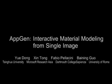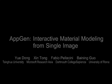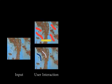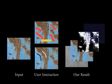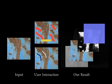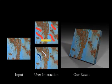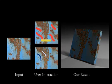This paper presents AppGen, an interactive system for modeling material from a single image input. Given an input image, the user can interact with our system using a stroke-based interface to specify global shading and reflectance, while our algorithm infers the reflectance and normals for each pixel, and finally generates the spatially varying reflectance and normal details.